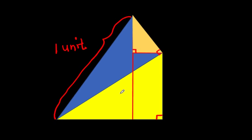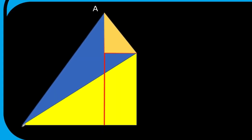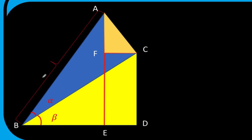Now let's put some labels on our figure. We'll call the vertices point A, point B, and point C. The acute angle of the blue right triangle is denoted as alpha. Then we call the next vertex point D, and the angle formed by the yellow triangle is denoted as beta. We also label points E and F. We know the hypotenuse of the blue right triangle is one unit, and that F, C, D, E is a rectangle, meaning side FC is parallel to side ED. We can extend side ED to include side BD, so segment BD is parallel to segment FC.